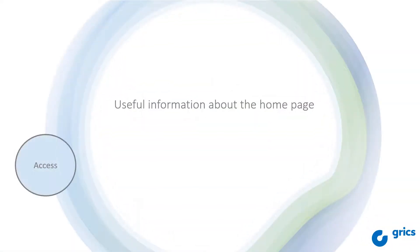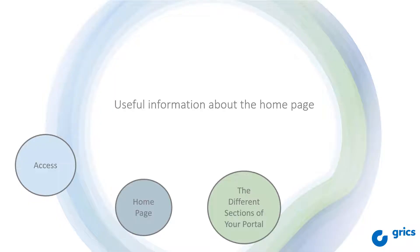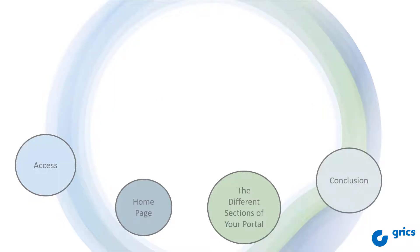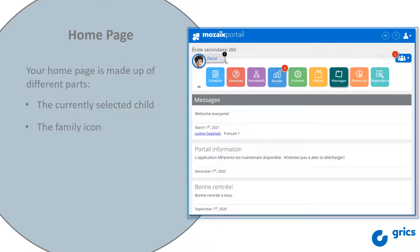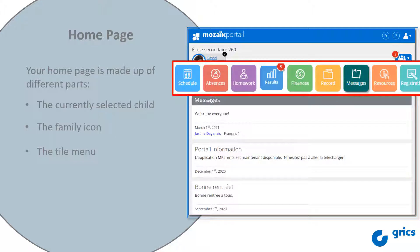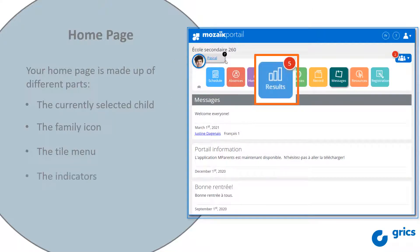Let's go see your home page. Your home page is made up of different parts: the currently selected child, the family icon to switch from one of your children to the other, and the tile menu with red indicators that tell you new information is available. When you sign in, the Messages section is automatically open.